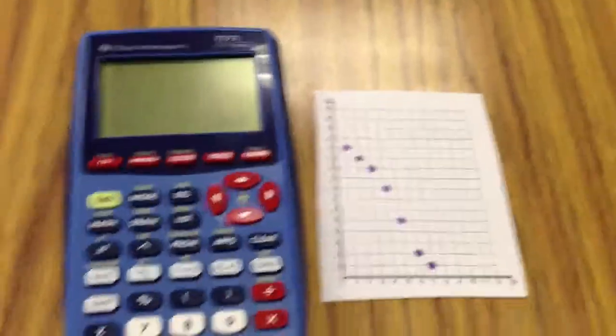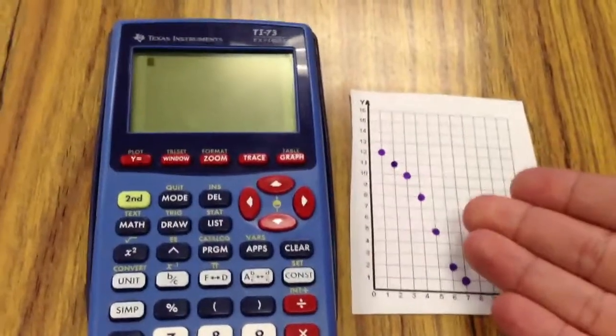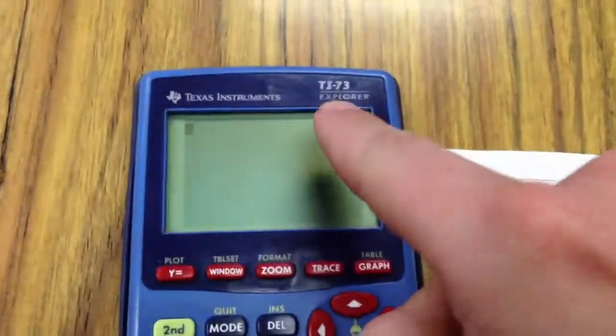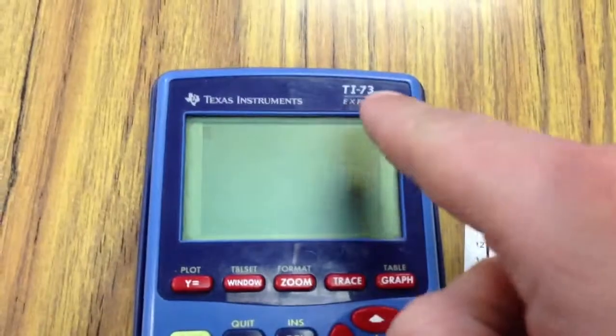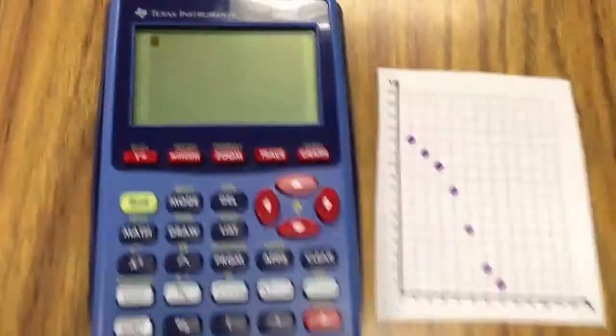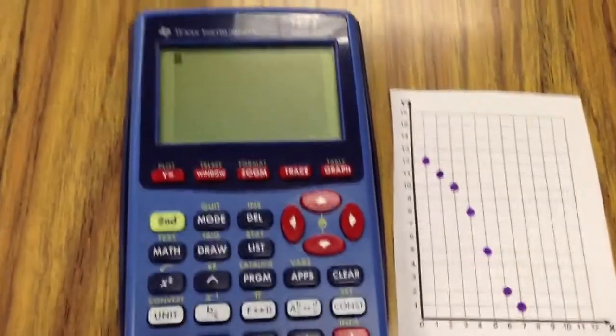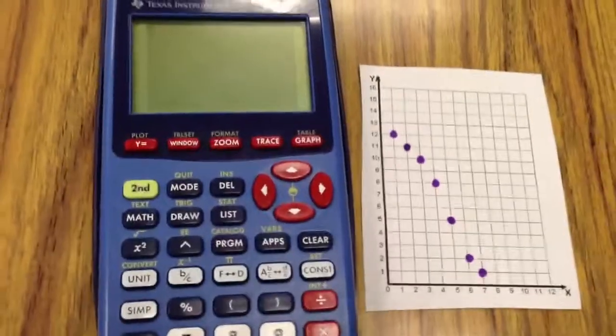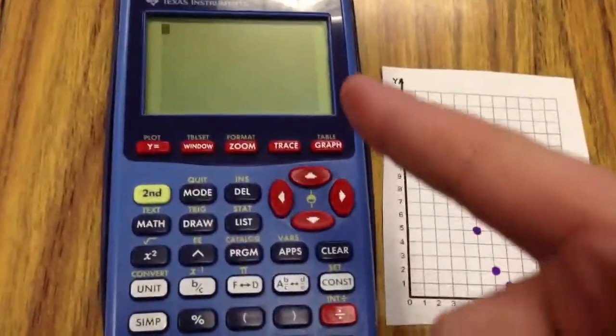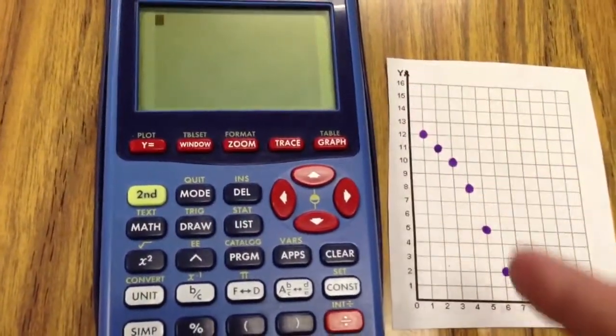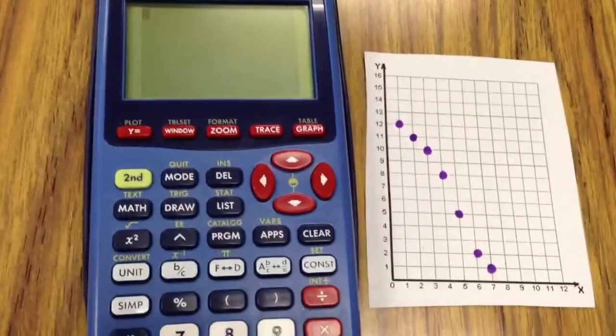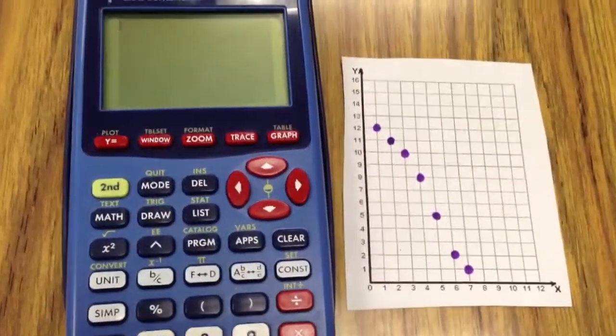Alright y'all. Let's see what we got going on here. We got ourselves a nice scatter plot, and we have ourselves our TI-73 calculator. My job is to find the equation for the line of best fit. I'm going to use a process called linear regression.